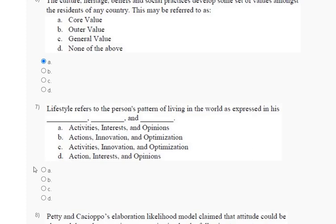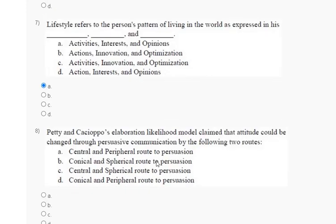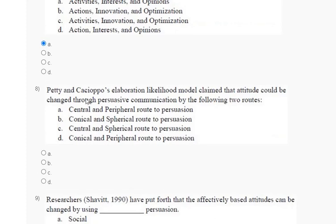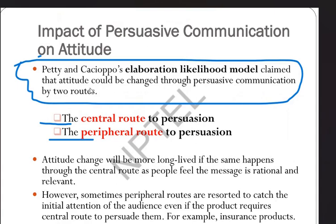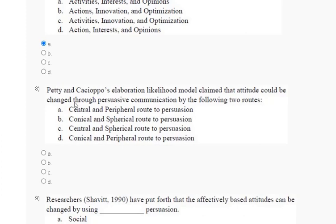Question number 8: Petty and Cacioppo's Elaboration Likelihood Model claimed that attitude could be changed through perceived communication by two routes. The explanation is: the two routes are the central route and the peripheral route. So the correct answer for question number 8 is option number A.